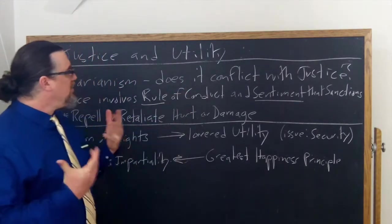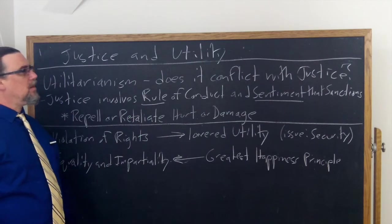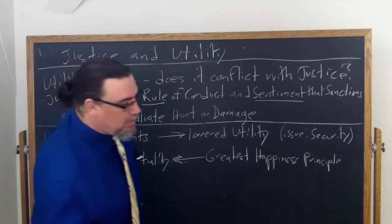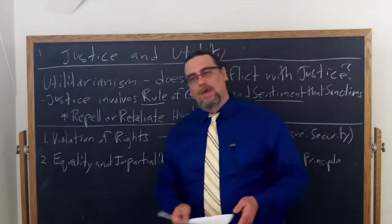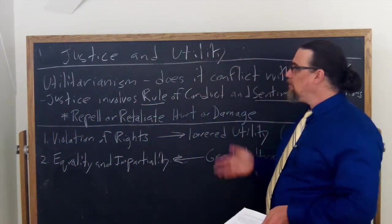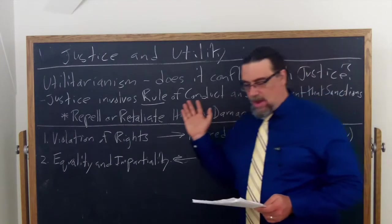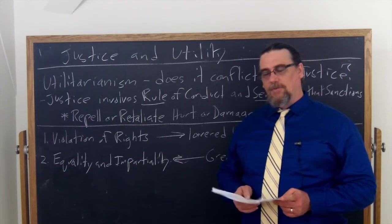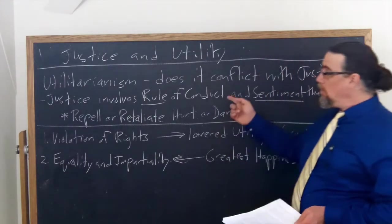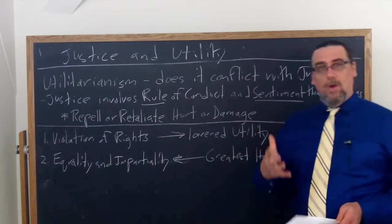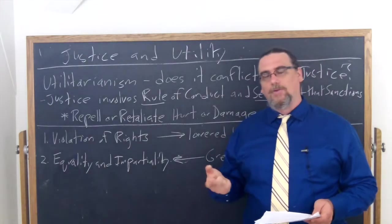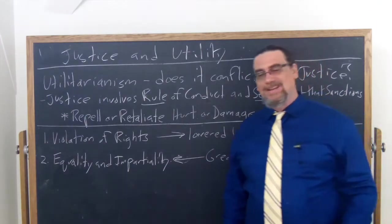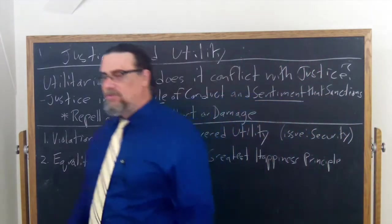So the question is, does utilitarianism conflict with justice? Mill is trying to say that no, it really doesn't, but we have to see why that's the case. So he tells us a few things. One is that the idea of justice itself involves two things. He says a rule of conduct—how we ought to behave, how we ought to decide things, how we ought to apportion goods—and a sentiment which sanctions the rule.